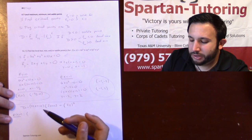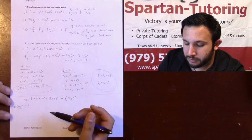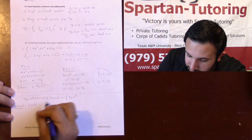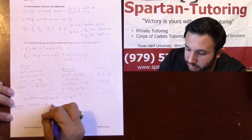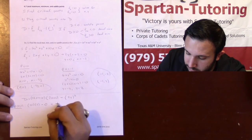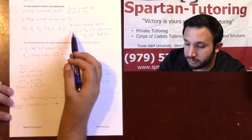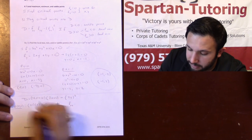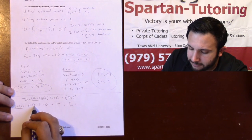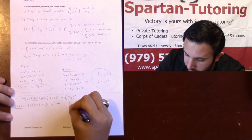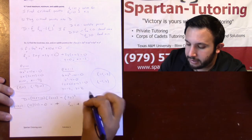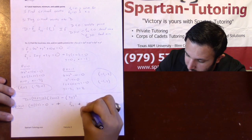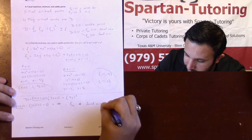At the point (0, 0): plugging into D — (0 + 10)(0 + 2) minus 0 squared equals 20, so D is positive. Since D is positive I look at fxx, which equals 10 — a positive value. A positive second derivative means concave up, which means a local min. So we have a local min at (0, 0).